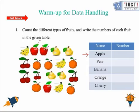To count the apples, we find there are 3, so we put 3 here. Similarly, we can count the number of pears, which is 4, bananas, which is 12, oranges, which is 5, and cherries, which is 8. This is the answer to the question.